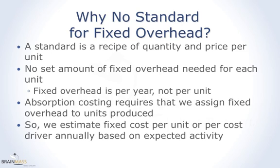Absorption costing — the GAAP rules, generally accepted accounting principles — requires that you put some fixed overhead in each unit. Even though there's not a standard amount per unit, you still have to put some in there. The way you do that is by estimating the fixed cost per unit each year when you do your budget or plan. But that changes every year. Standard cost for material, labor, and variable overhead don't change every year; they only change if the product or process actually changes. But for fixed overhead, we're going to have an annual application rate, not a standard per unit.